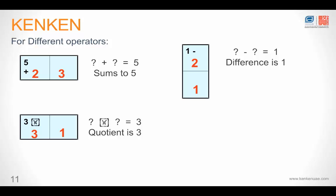Similarly in this one, it is three division. It would mean that we have to divide two numbers to get three. So the only option we have is three divided by one.